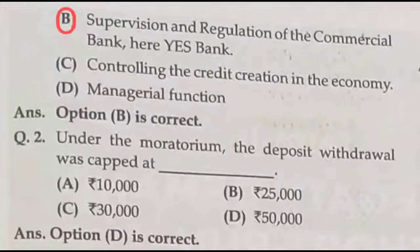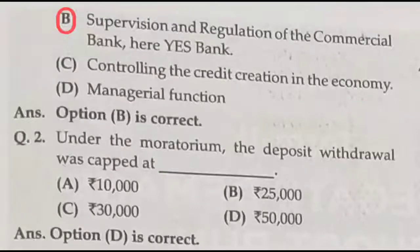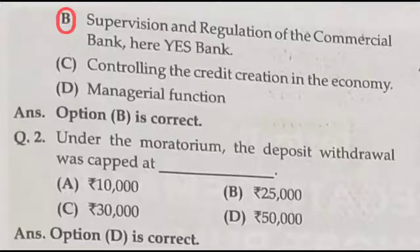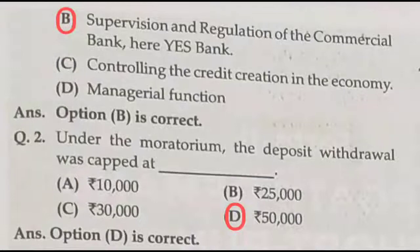Question two: under the moratorium — a moratorium is a holiday period where if you get a loan for a particular period, you need not repay that amount. Under the moratorium, the deposit withdrawal was capped. How much? It is given in the passage: Rs. 50,000 per person is the maximum cap. So option D is the correct answer.